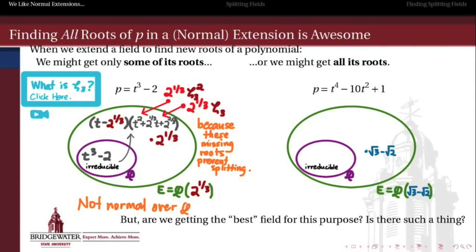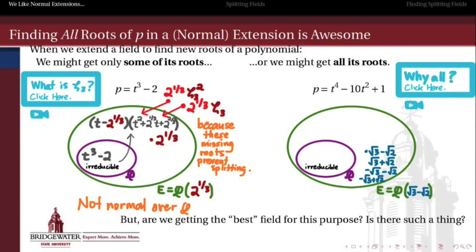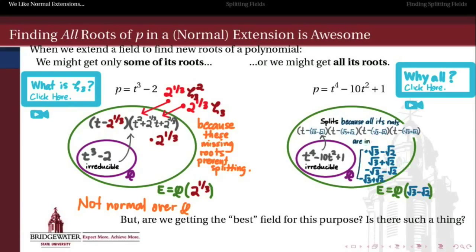On the other hand, consider this quartic polynomial with a root of √3 - √2. If that field contains √3 - √2, then it also contains √3 + √2, as well as -√3 - √2 and -√3 + √2. In other words, it can't contain one of those roots unless it also contains all of the others. And because it contains all of those roots, this quartic polynomial completely splits into linear factors over E — exactly all of its roots belong to the field E. We showed in the last video that this indicates E is in fact a normal extension of the rationals.